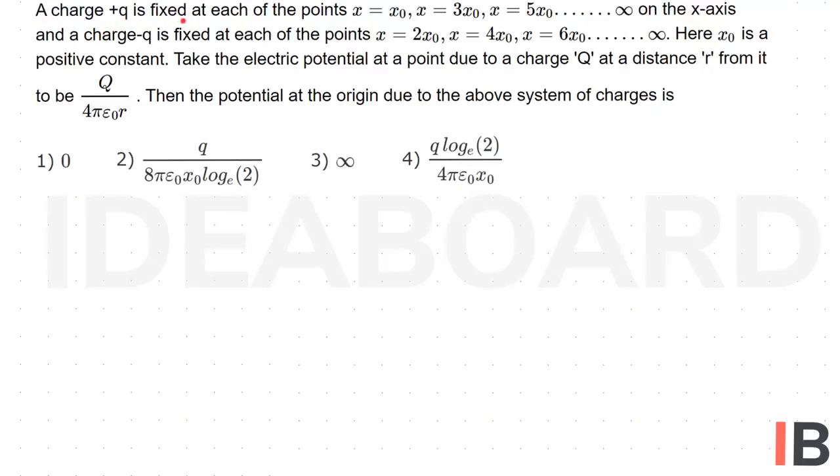A charge plus q is fixed at each of the points x equal to x0, x equal to 3x0, x equal to 5x0, up to infinity on the x-axis. A charge minus q is fixed at each of the points x equal to 2x0, x equal to 4x0, x equal to 6x0, and so on to infinity. Here x0 is a positive constant.